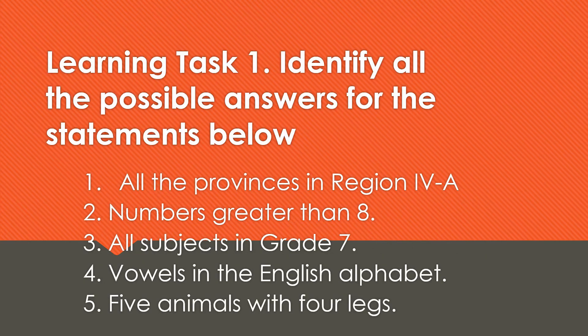For learning, Task 1: identify all the possible answers for the statements below. Number one: all the provinces in Region 4A. Number two: numbers bigger than eight. Number three: all subjects in Grade 7. Number four: vowels in the English alphabet. Number five: animals with four legs. Write the elements in each item.